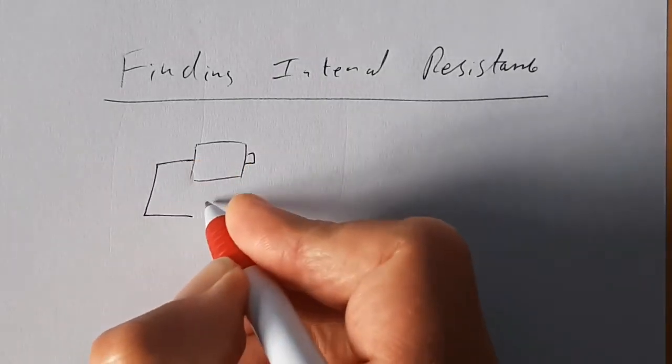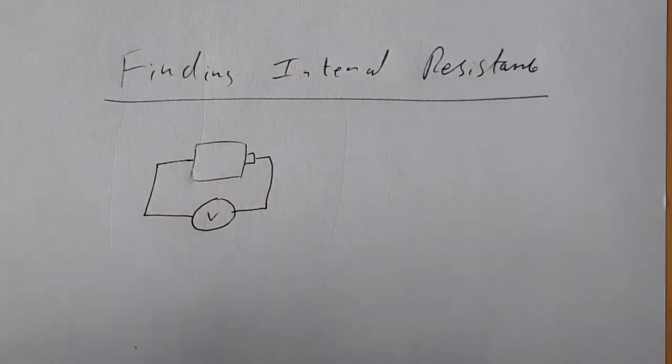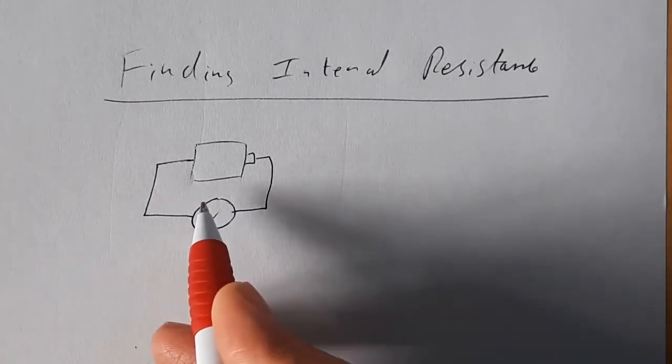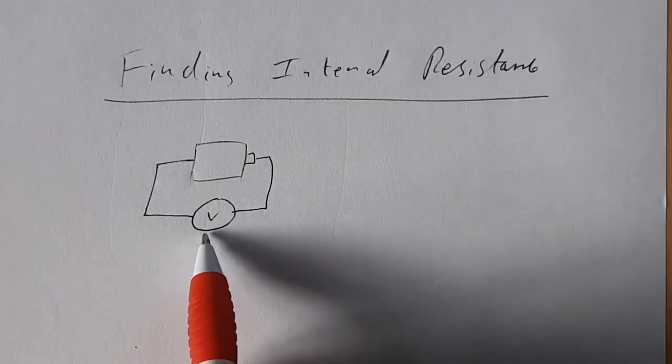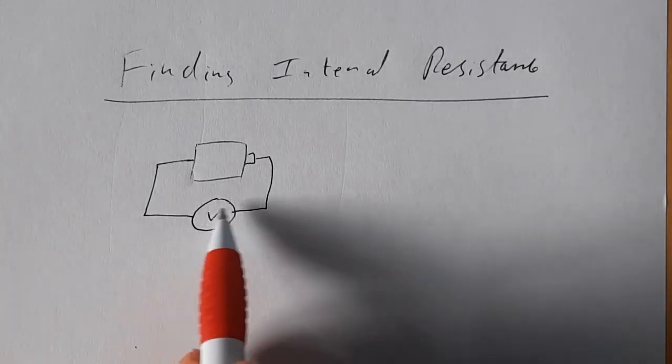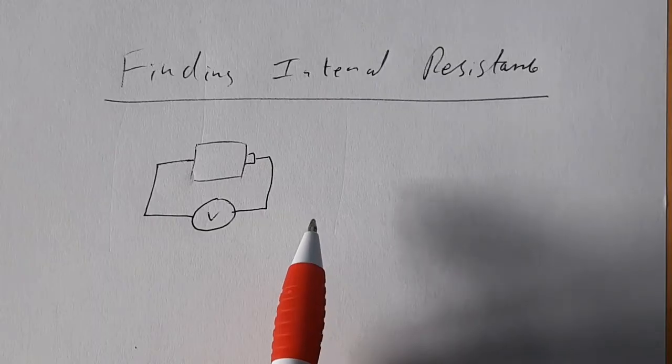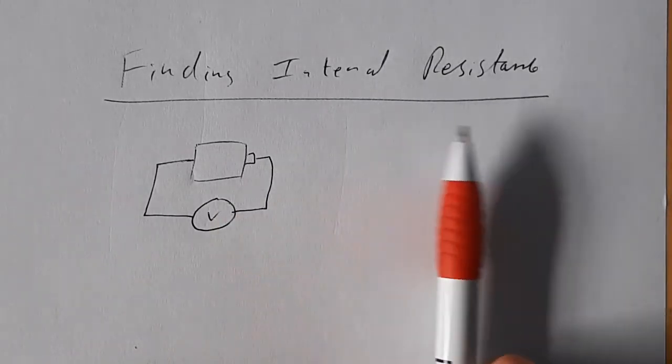The short answer as to how you find the EMF, just put a voltmeter across it because remember a voltmeter has got infinite resistance and therefore if the voltmeter has got infinite resistance there's no current and therefore the voltage across the battery is the EMF. It used to be a problem, but electronic voltmeters really do have very high resistance, high enough that we can ignore any current flowing through them. It wasn't true back in the day with the old fashioned meter with a needle.